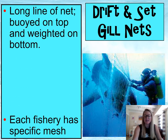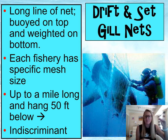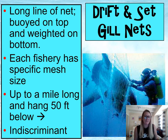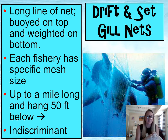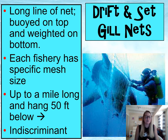Our second technique is called a drift net or set gill net. Similar to purse seining, you have a buoy on the top and a weight at the bottom, and you throw it into the water and let it drift. Each fishery will have a specific net size depending on what kind of fish they want. Fish swimming along enter the net and get stuck. These nets can be up to a mile long and hang 50 feet down into the water, and they are indiscriminate as well.